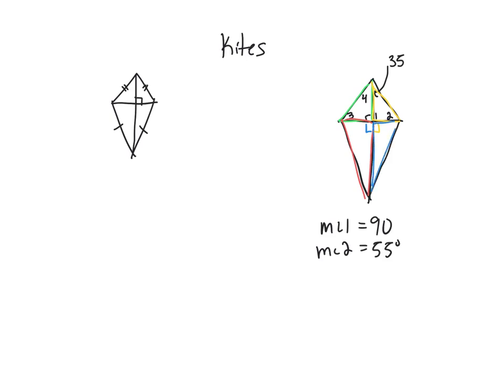Everything that corresponds is going to be the same, so that means that the measure of angle 4 is also going to be 35 degrees and the measure of angle 3 is also going to be the same as measure of angle 2 at 55 degrees.